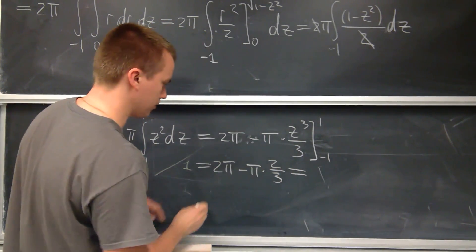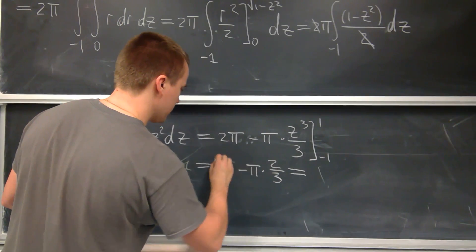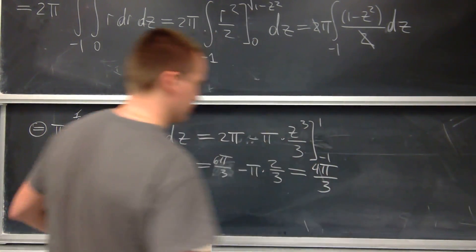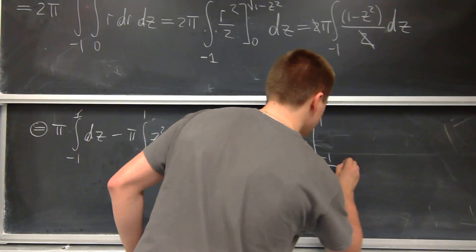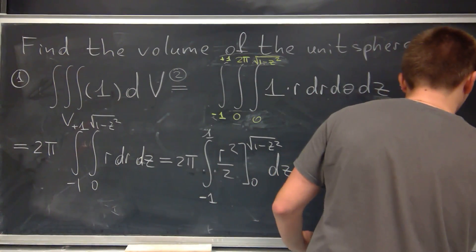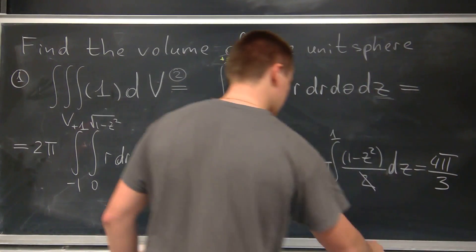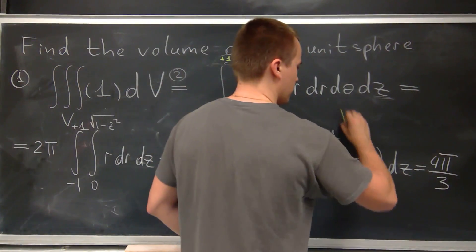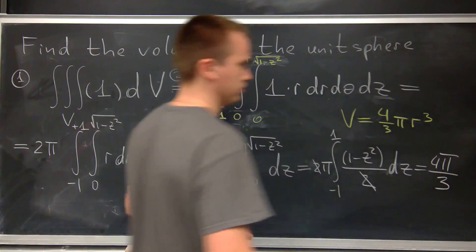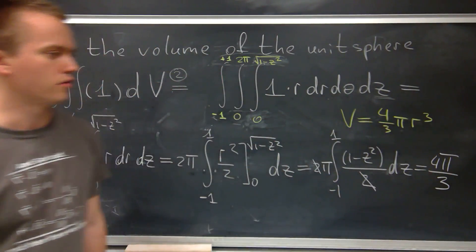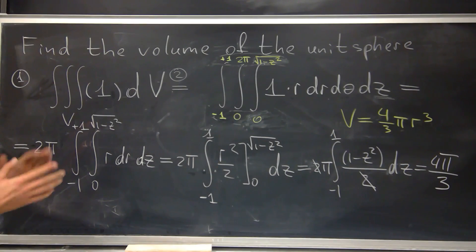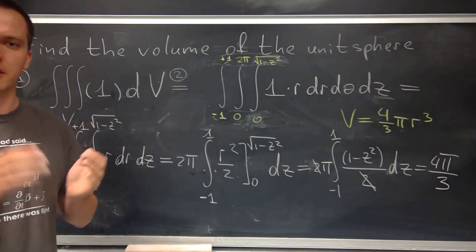Subtracting: 2π - 2π/3 = 6π/3 - 2π/3 = 4π/3. So our answer is 4π/3. As you can see, this matches the known formula for the volume of a sphere: V = (4/3)πr³. Since we have a unit sphere where r = 1, the volume is indeed 4π/3. Thank you for watching — let me know if you have any questions, please subscribe, and bye-bye!